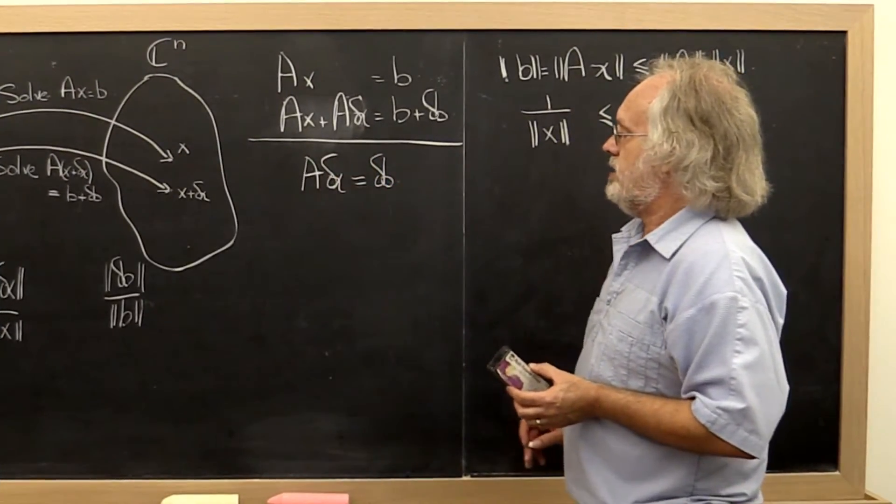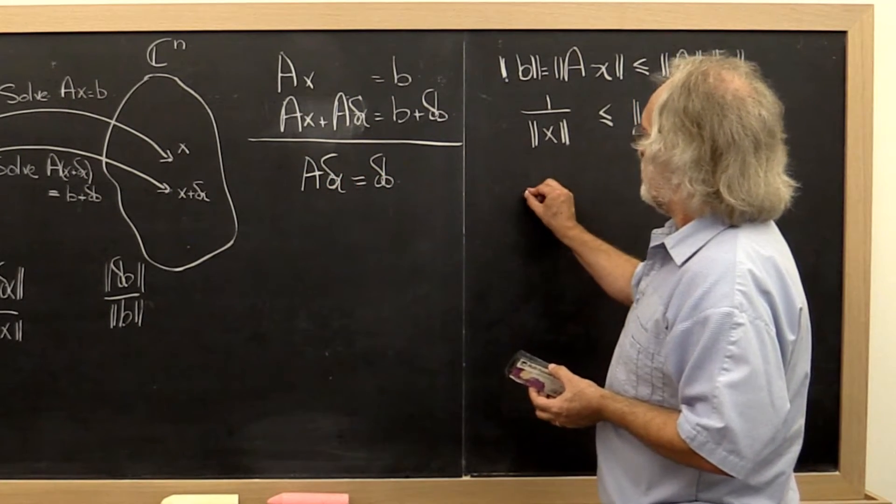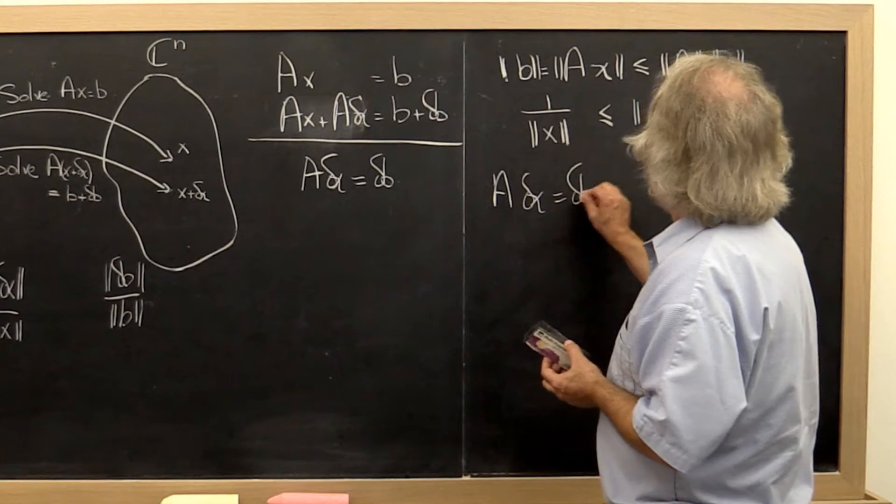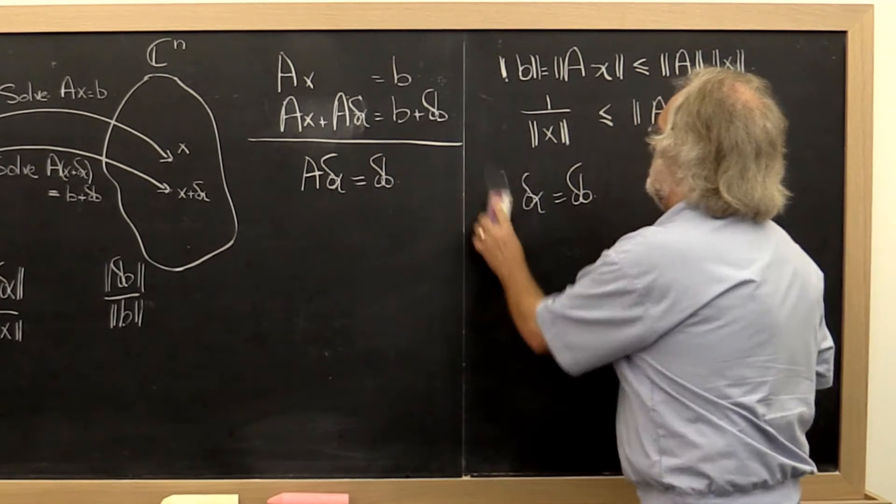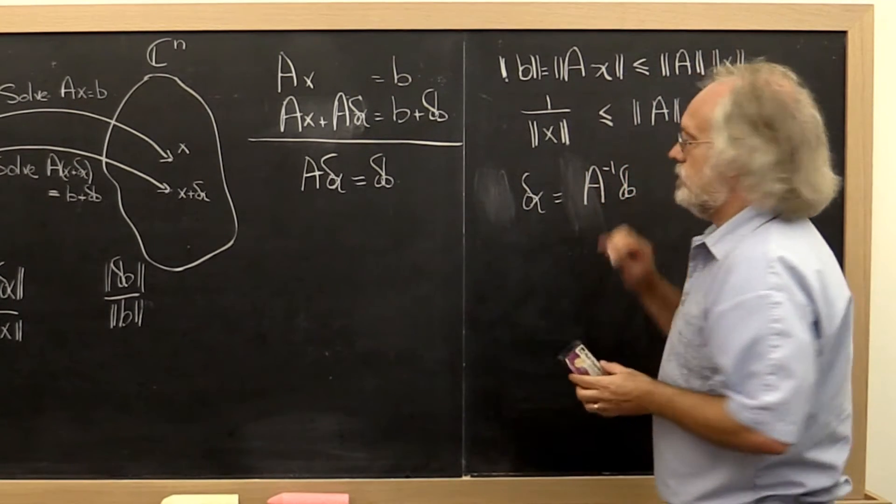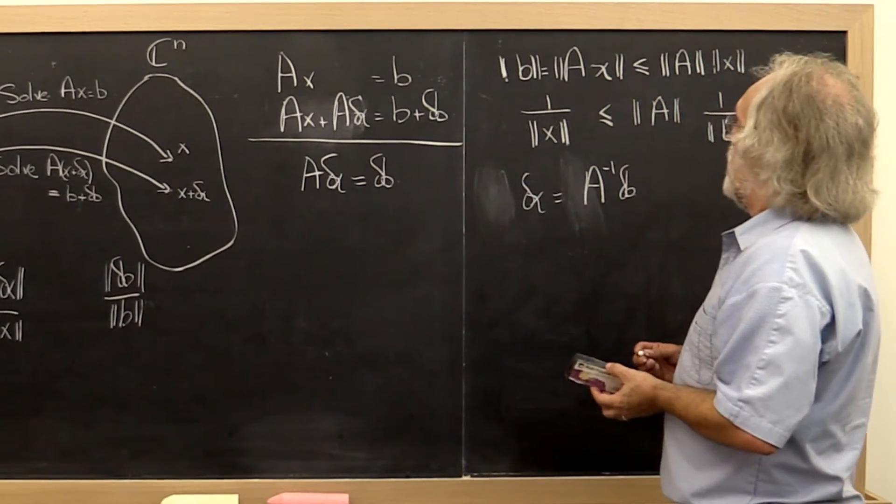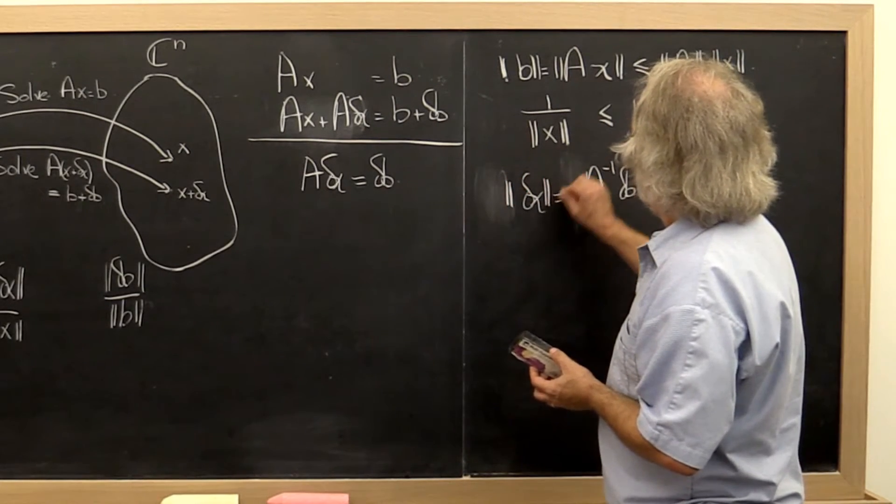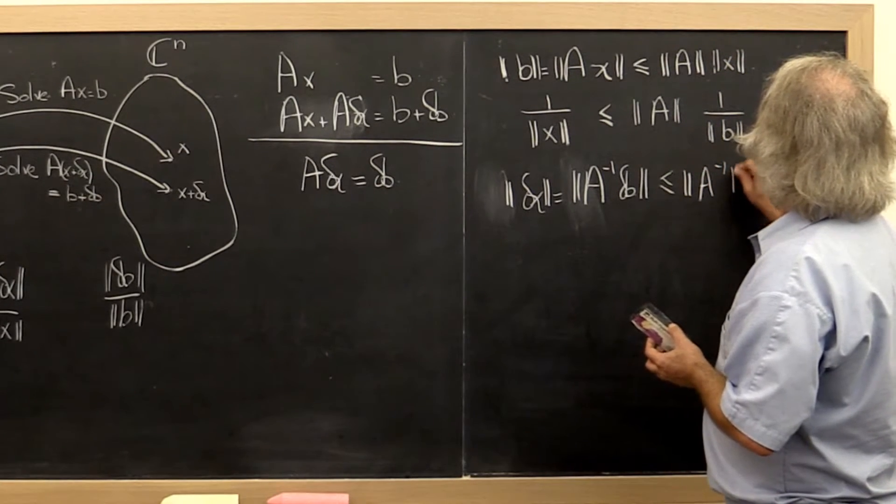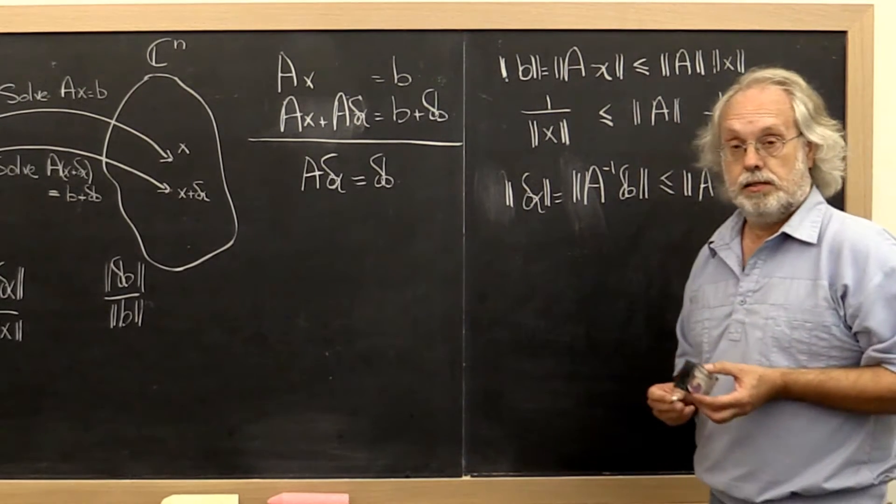Now we need to relate delta x and delta B with norms. For that we're going to rewrite A times delta x equals delta B as delta x equals A inverse times delta B. We can do that because we assumed that A was non-singular and therefore we know it has an inverse matrix. Then we can take the norm of that and bound it by the norm of A inverse times the norm of delta B.